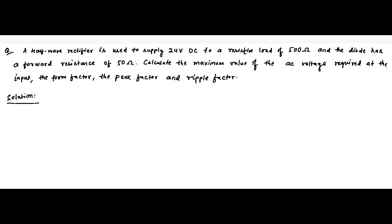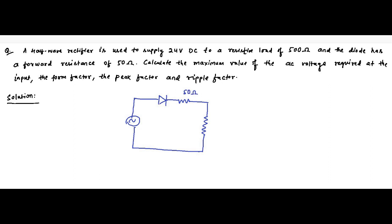First we have to draw the diagram. We have an AC supply, we have a diode which has a certain forward resistance, and it is connected across a resistive load. The forward resistance RF is equal to 50 ohm, the load resistance RL is equal to 500 ohm, and this is the supply voltage.